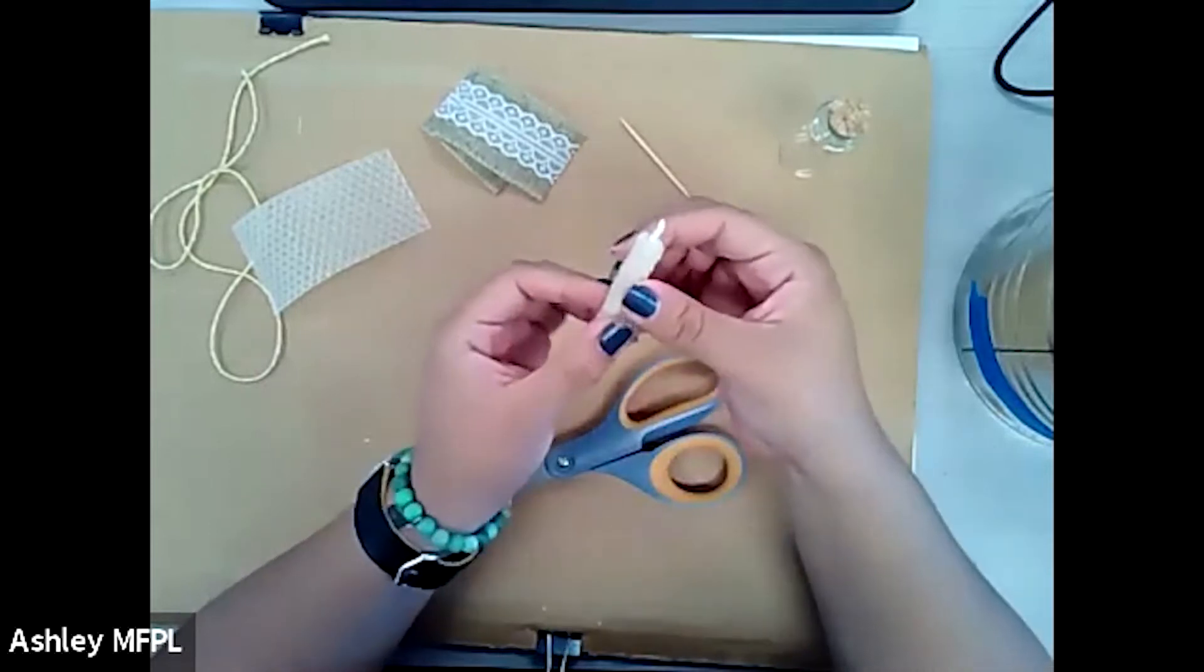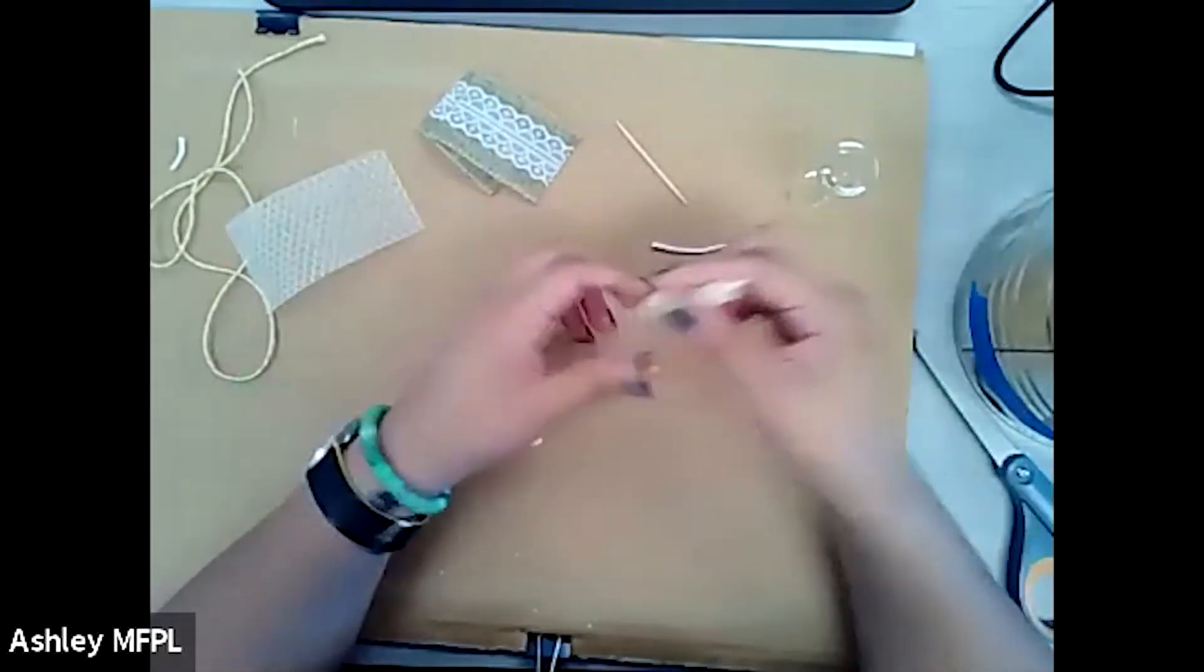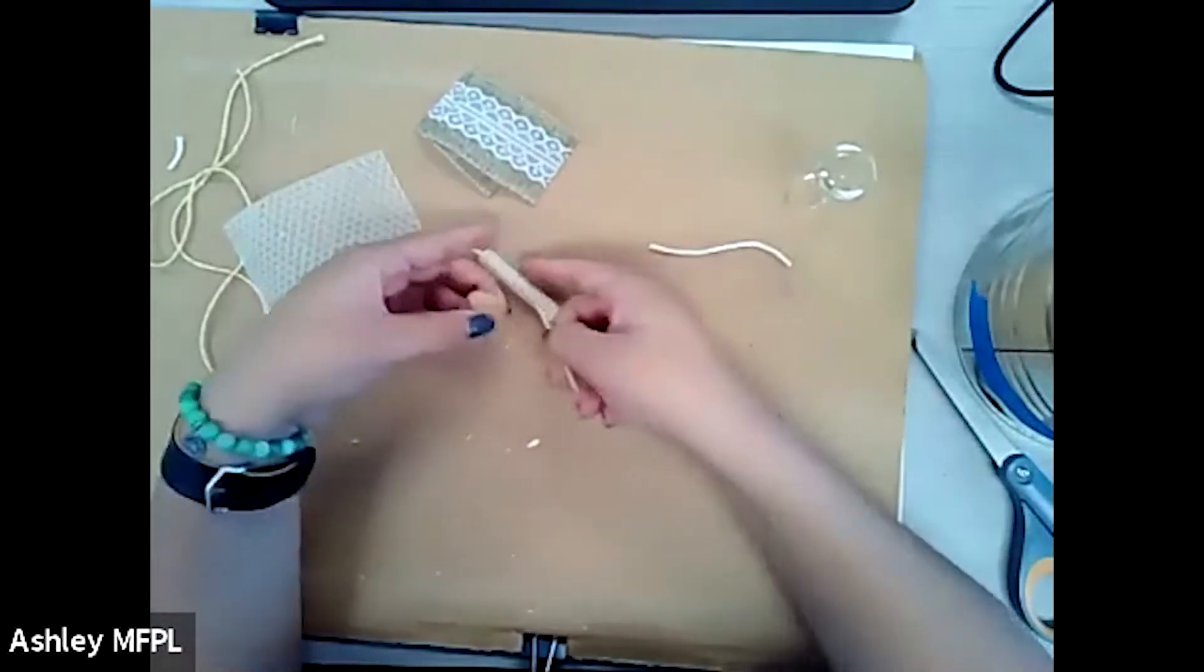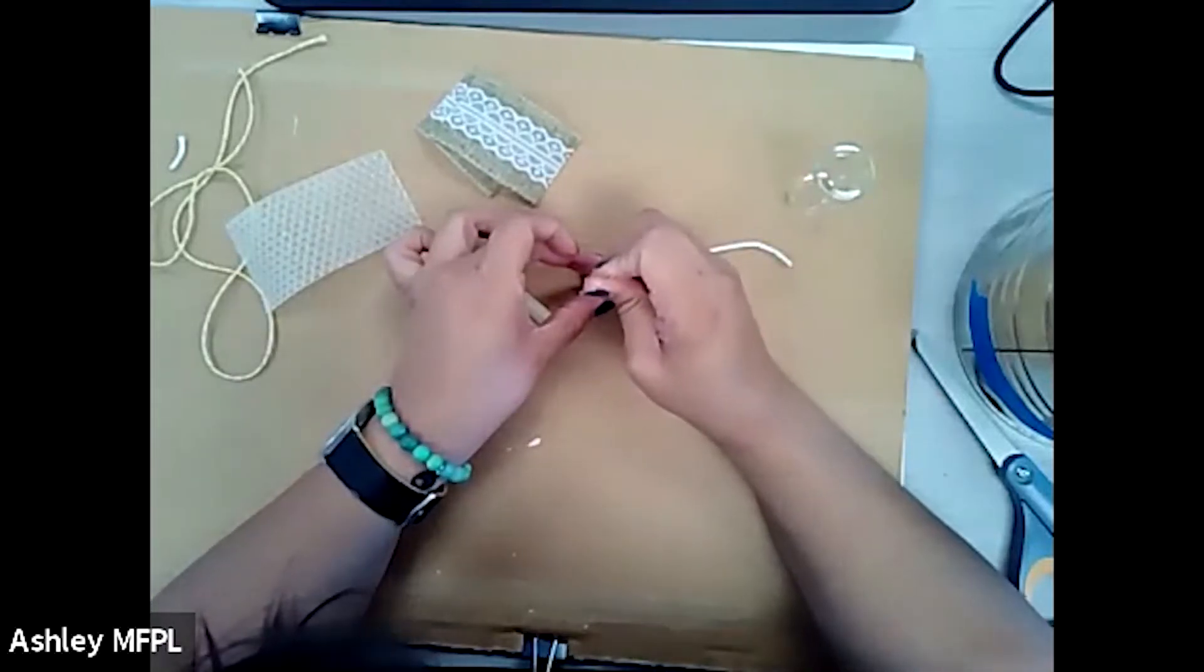And that's pretty much how you roll a beeswax candle. It's really simple. So the next part is we're going to place it on the little cork. So you're going to take your toothpick and you're just going to make a hole in the center.